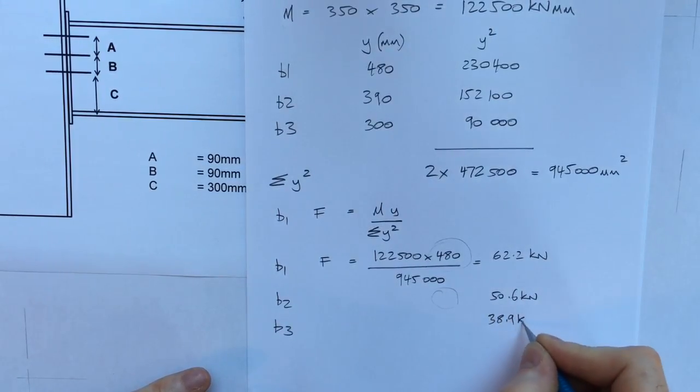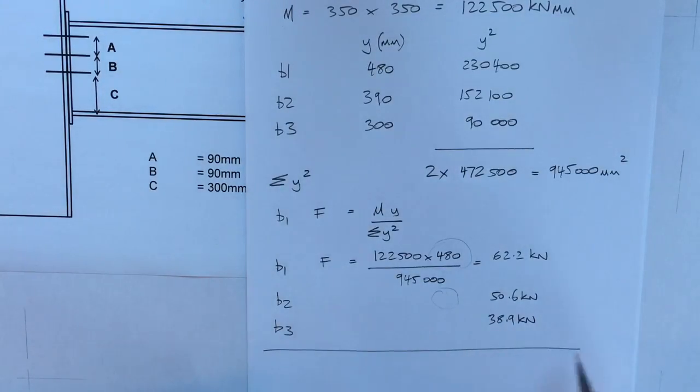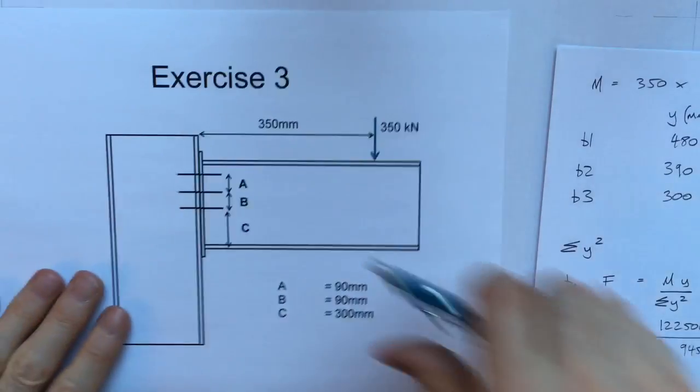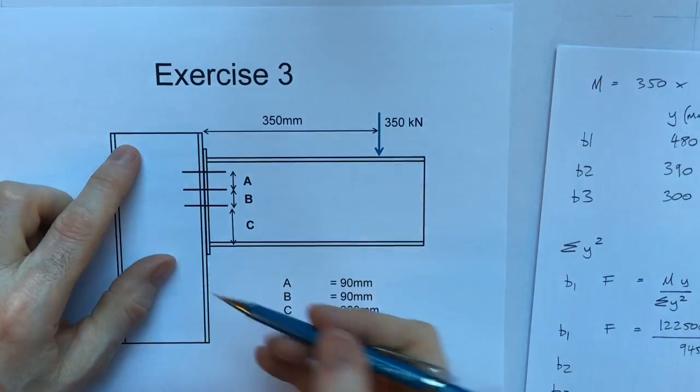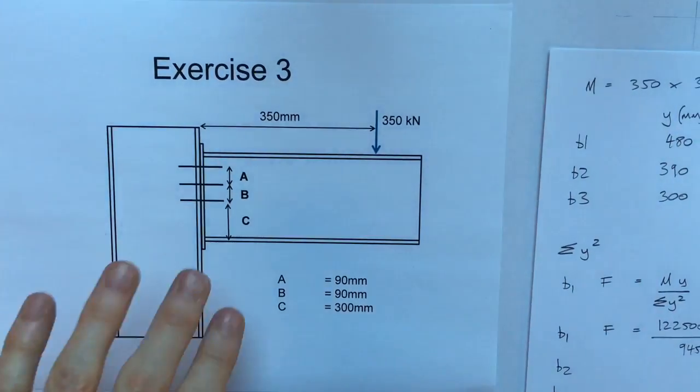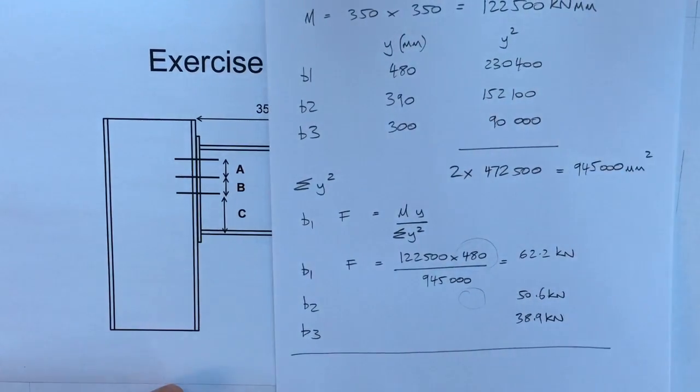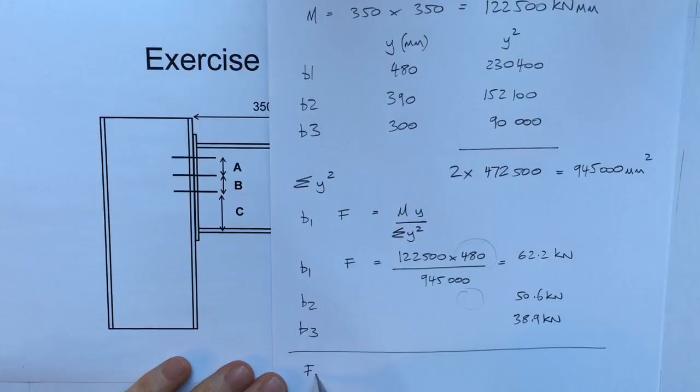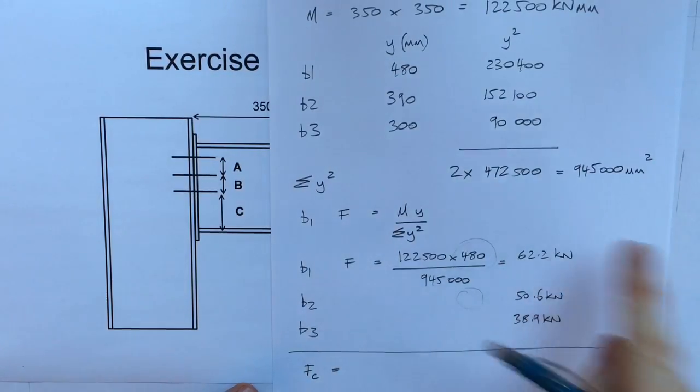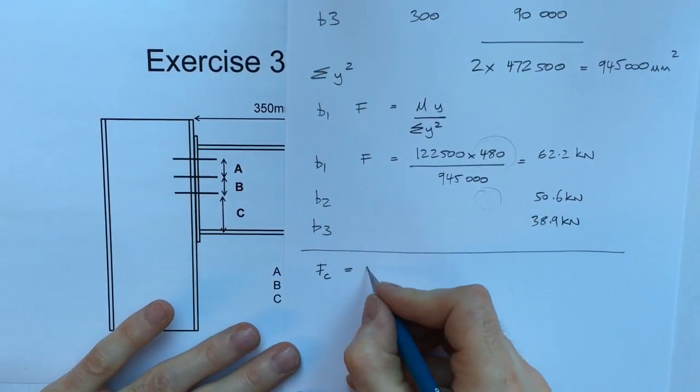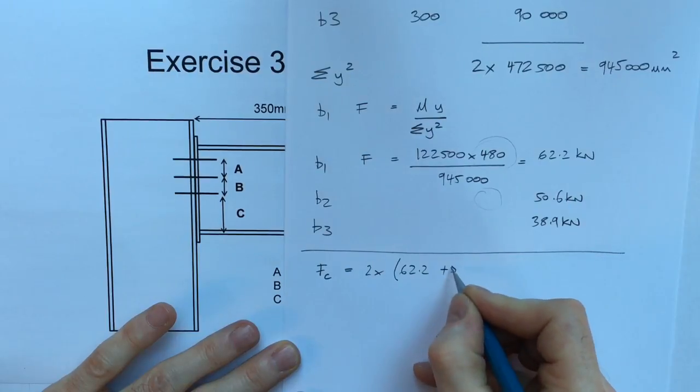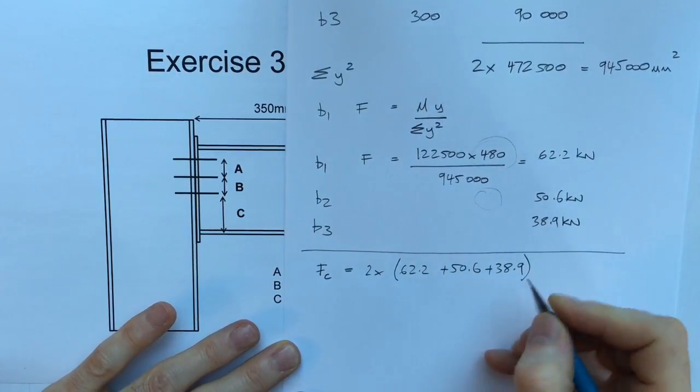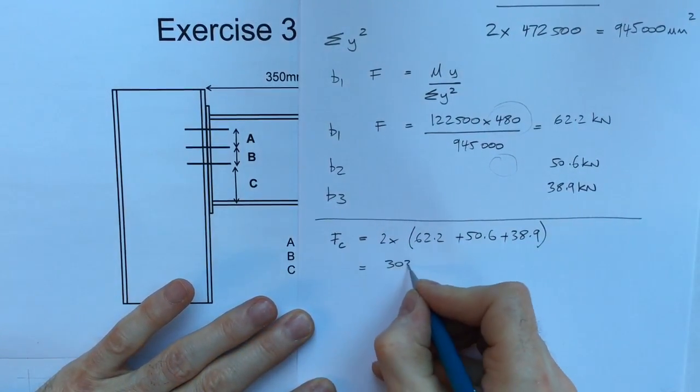All of these bolts are in tension pulling towards the right hand side as that beam cranks down. But there's a compressive force here pushing to the left hand side. That compressive force must exactly equal the sum of the tension forces or the whole thing won't be in horizontal equilibrium. So the compression force acting at the point where the bottom flange is is simply the sum of all of these other forces. The compression force is two times 62.2 plus 50.6 plus 38.9, that comes to 303.4 kilonewtons.